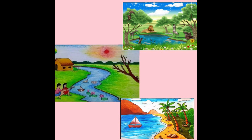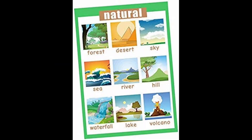Look at the picture and list out the things you see in it. Yes — sun, river, boat, house, tree, animals, mountains. Very good. There are many things in this picture.